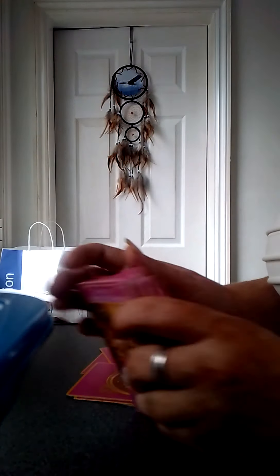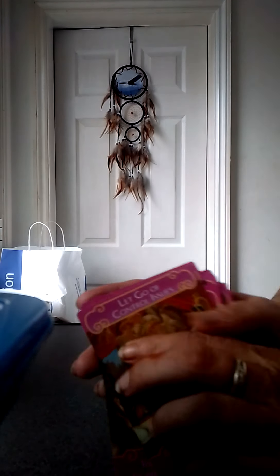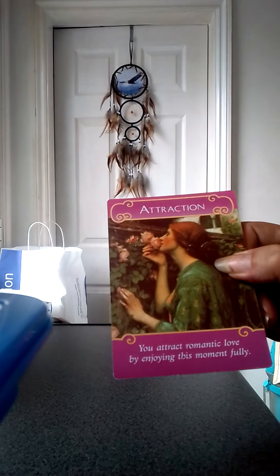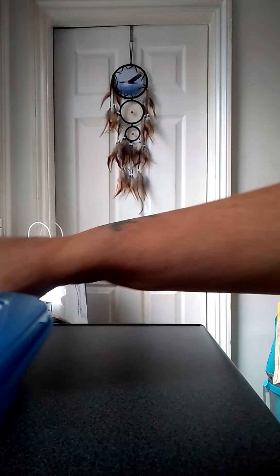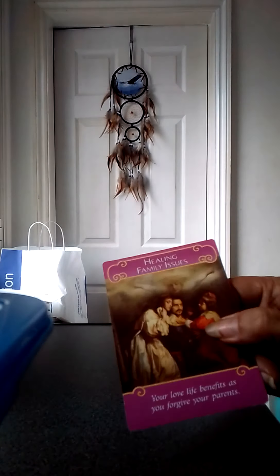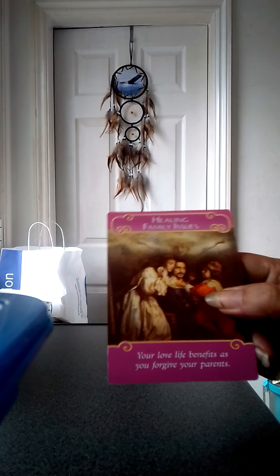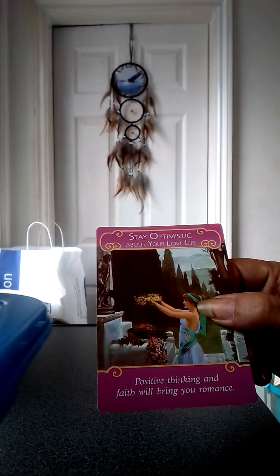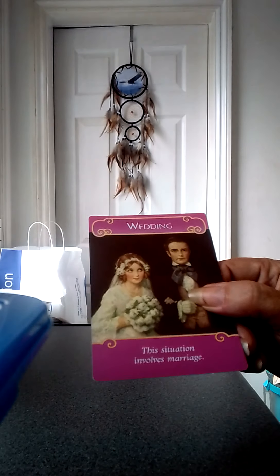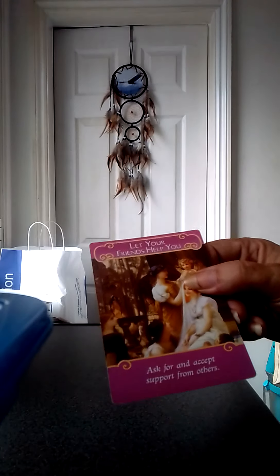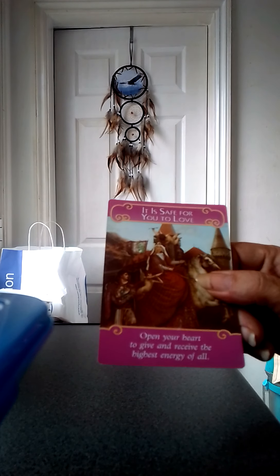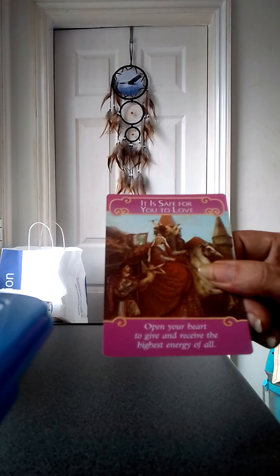Aries, are you very tired at the moment? I'm feeling quite drained. You have let go of control issues. Allow this situation to unfold naturally. You have attraction. You attract romantic love by enjoying this moment fully. Pay attention to the red flags. The signs are cautioning you. Have healing family issues. Your love life benefits as you forgive your parents. Stay optimistic about your love life. Positive thinking and faith will bring you romance. A wedding. This situation involves marriage. Let your friends help you. Ask for and accept support from others. It is safe for you to love. Open your heart and give and receive the highest energy of all.